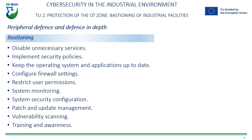System security configuration: it is important to ensure that the system is configured securely. This may include disabling outdated or insecure network protocols, enforcing password security policies, implementing access controls, and setting file and directory permissions.